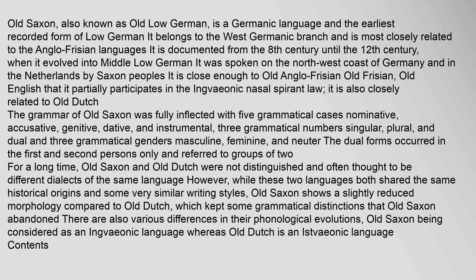Old Saxon, also known as Old Low German, is a Germanic language and the earliest recorded form of Low German. It belongs to the West Germanic branch and is most closely related to the Anglo-Frisian languages. It is documented from the 8th century until the 12th century, when it evolved into Middle Low German.